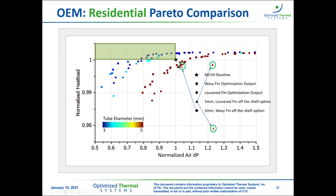For the two-ton residential system, the main takeaway is similar: off-the-shelf fin designs are competitive with the micro channel heat exchanger baseline, and when the fin design is optimized, those designs can actually dominate the micro channel baseline.